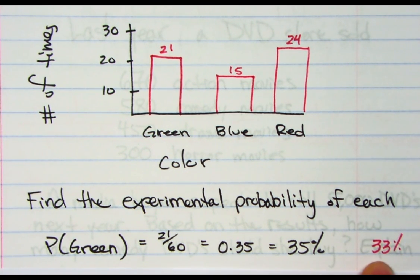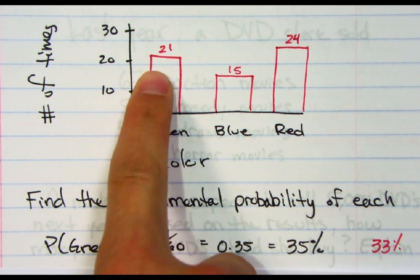The theoretical probability told me it should have been a third or 33%. So this is a little bit more, over by one. We were looking for 20.